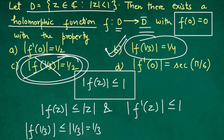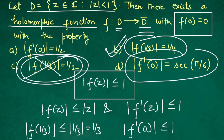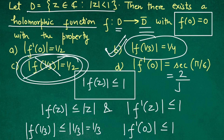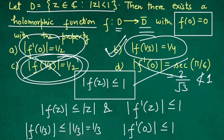Now let's find f'(0). There is one more result associated with Schwarz Lemma: |f'(0)| ≤ 1. In option D, f'(0) = sec(π/6), and we know sec(π/6) = 2/√3, which is not less than 1, so option D is also incorrect. In option A, f'(0) = 1/2, which is less than 1, so option A is correct.